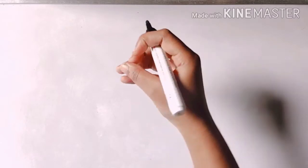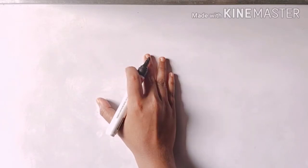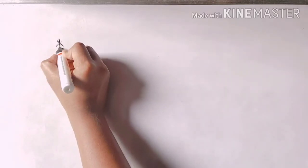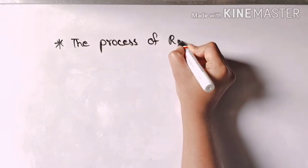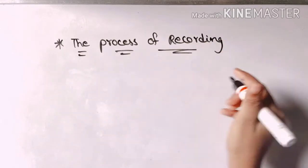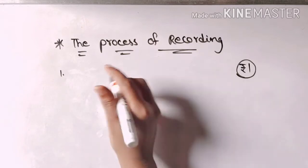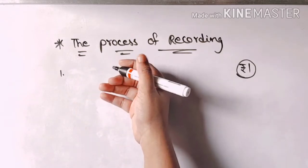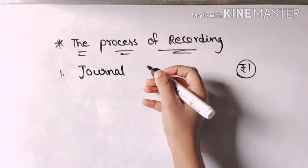I want to recollect the topic of the process of recording in the books of accounts. If you are familiar with these topics, please do not skip the video — it is only 10 minutes and then we will jump to the main concept. The process of recording: firstly, business transactions must be recorded in the books of accounts, even a transaction worth one rupee. These are recorded by way of journal entries in the book called the journal.